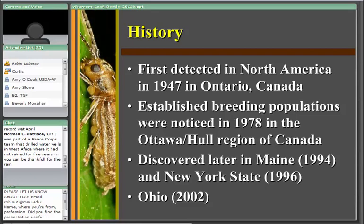It was first detected in Ontario, Canada in 1947 — at that time just identified as the viburnum leaf beetle — and the first breeding populations weren't seen until 1978. So there was a very long interim between first detection and when populations began building on viburnum. It moved from Canada into the New England states, identified in Maine first in 1994, then New York in 1996, eventually entering Pennsylvania. Dr. Young first saw it in 2001, taking a trip to Presque Isle, Pennsylvania to observe well-established populations on Viburnum dentatum at Presque Isle State Park.